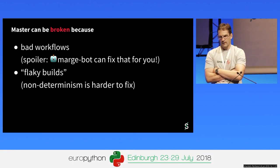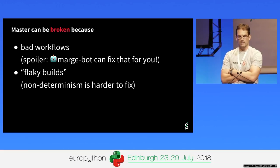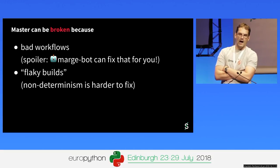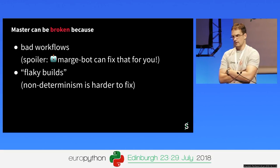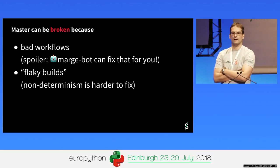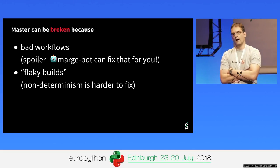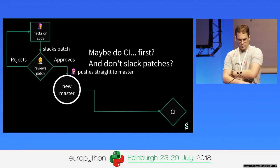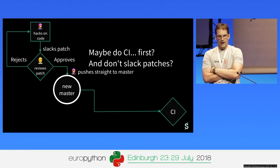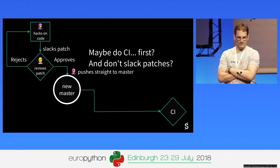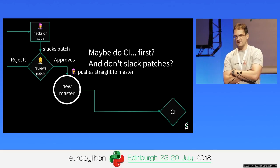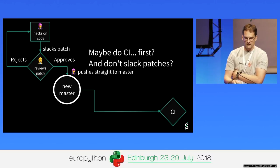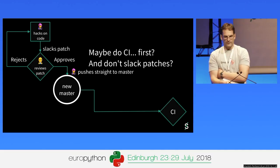There are two reasons that a master can be broken. The first one is bad workflow, and I'm going to talk about how to fix it — Marchbot will do it for you. The second one is admittedly a bit more difficult: flaky builds. Even if you have a good workflow, you can still be bitten by non-determinism, but that's difficult to avoid in a sufficiently complex project. The obvious solution to improve this workflow is to do CI first before you push things to master, and use some review system like GitLab or GitHub or Fabricator.